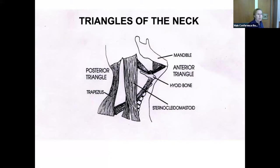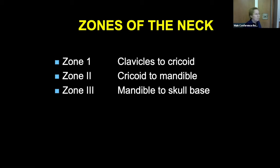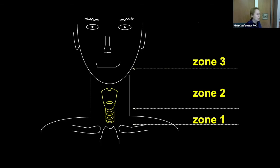Historically, neck anatomy was divided into anterior and posterior triangles, with the majority of major structures in the anterior triangle. But what we're familiar with was first described in 1979 by Roon and Christensen — the zones of the neck classification. This was originally designed for surgical approach, specifically where to make the incision based on anatomy. Zone one is the clavicles to the cricoid; zone two is the cricoid to the mandible; and zone three is the mandible to the skull base.